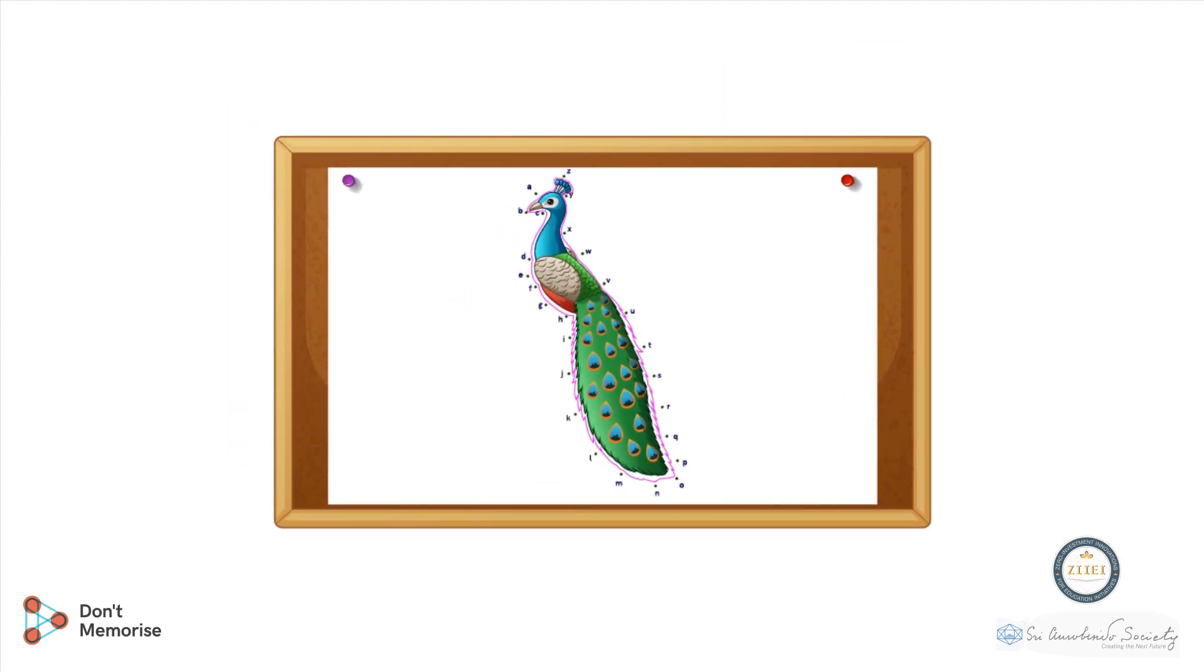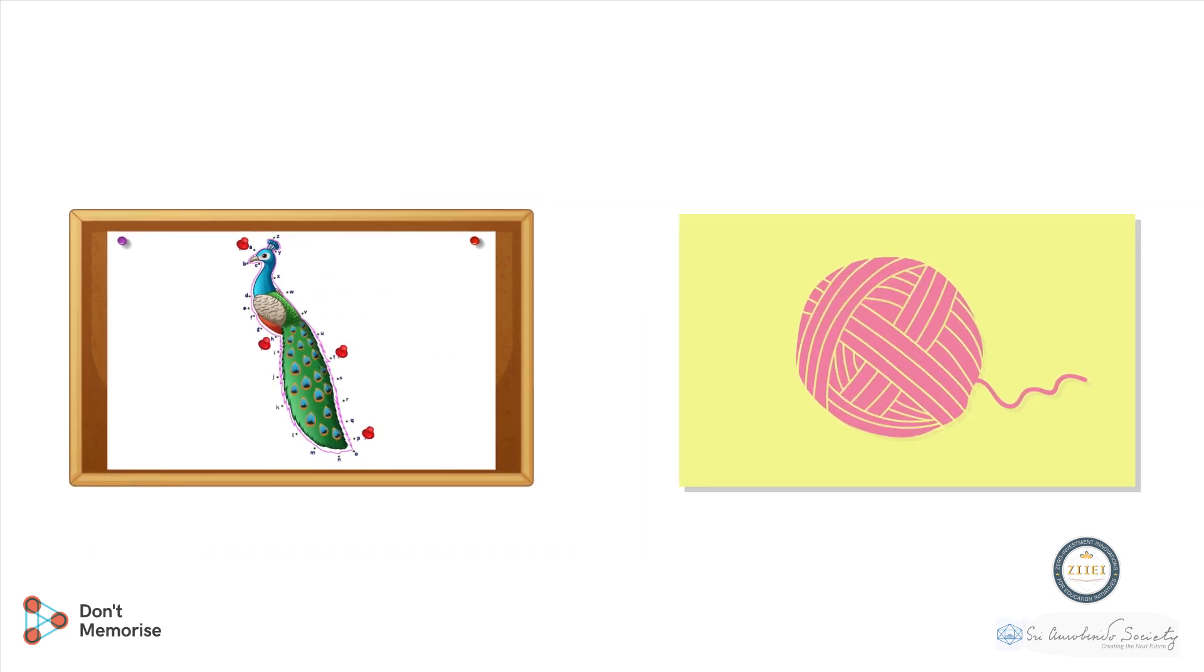Students will first trace the small letters. The softboard pins will be used to clip the letters on the mount board. Then the students will need to weave the wool in the form of a letter.